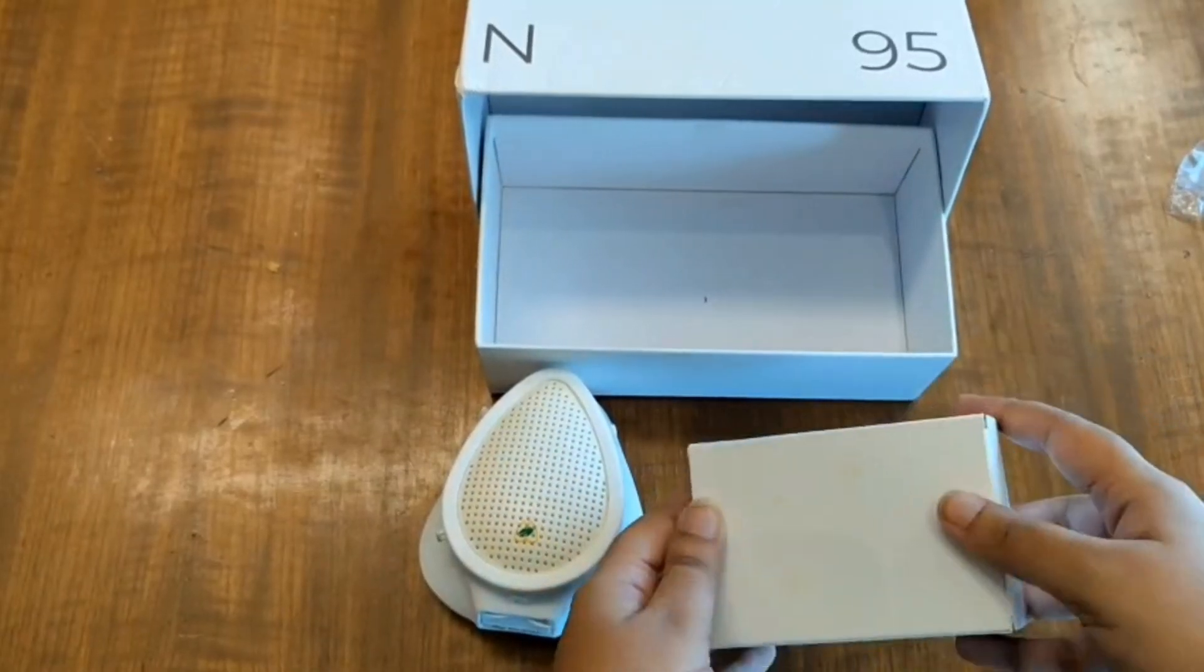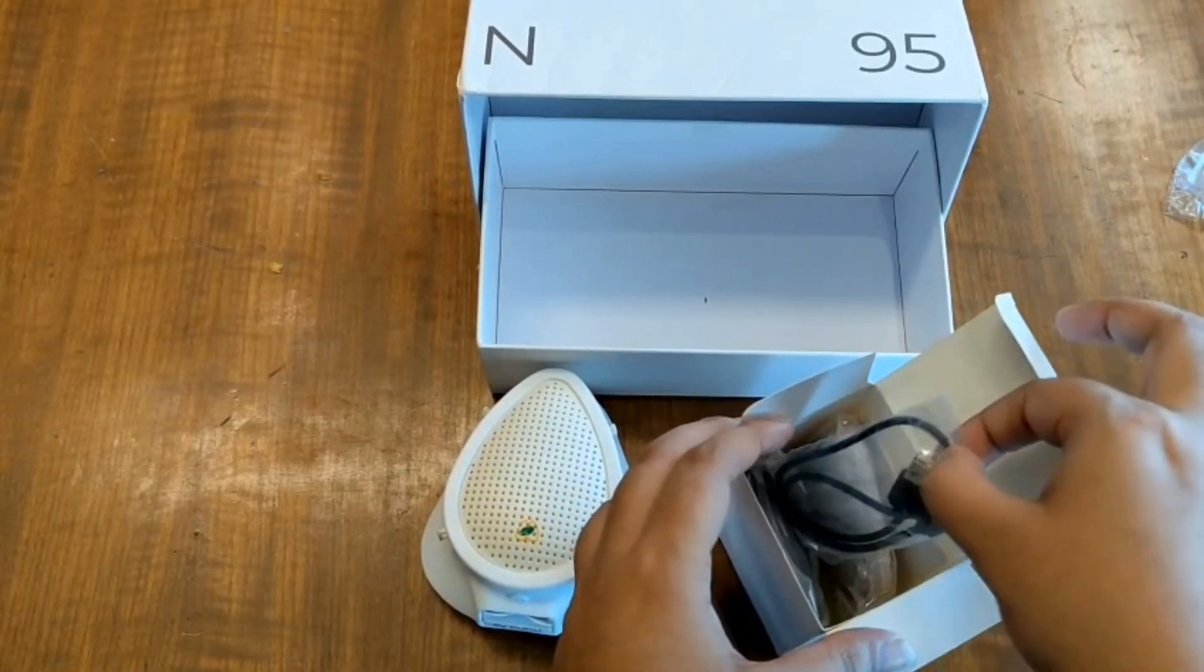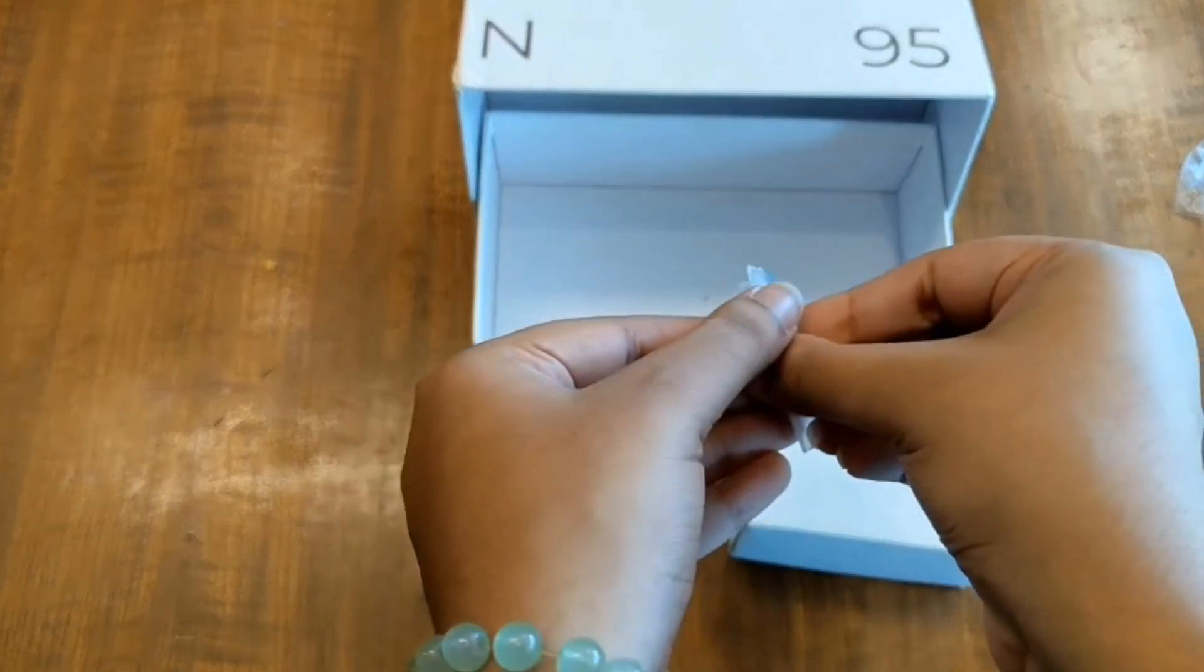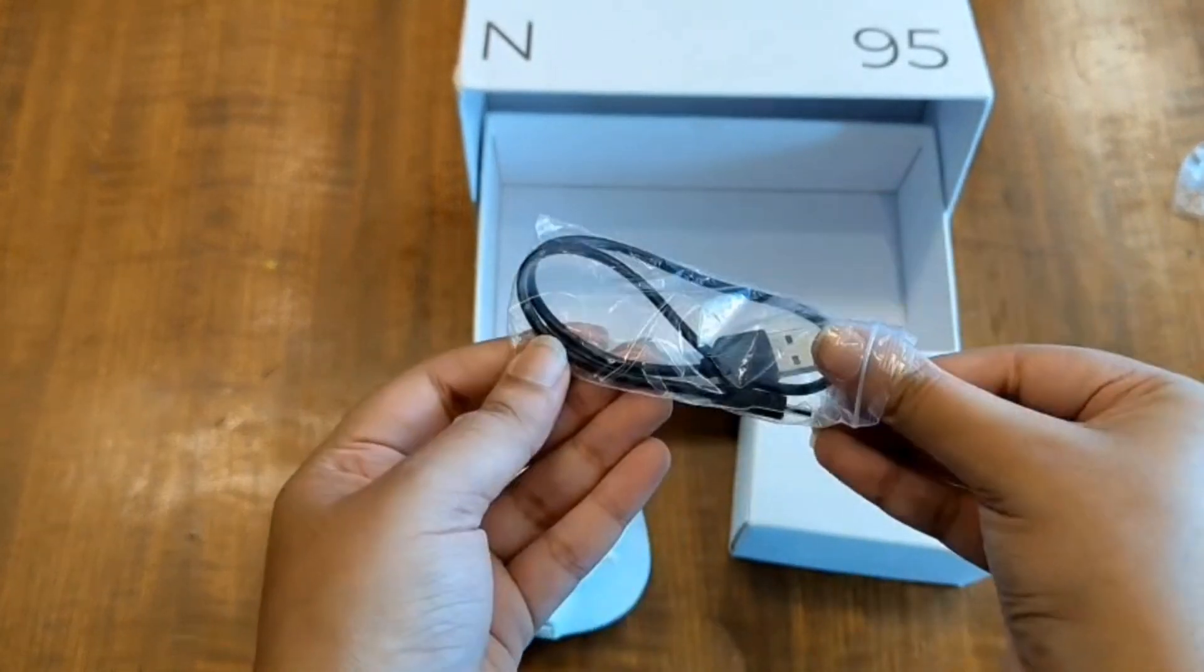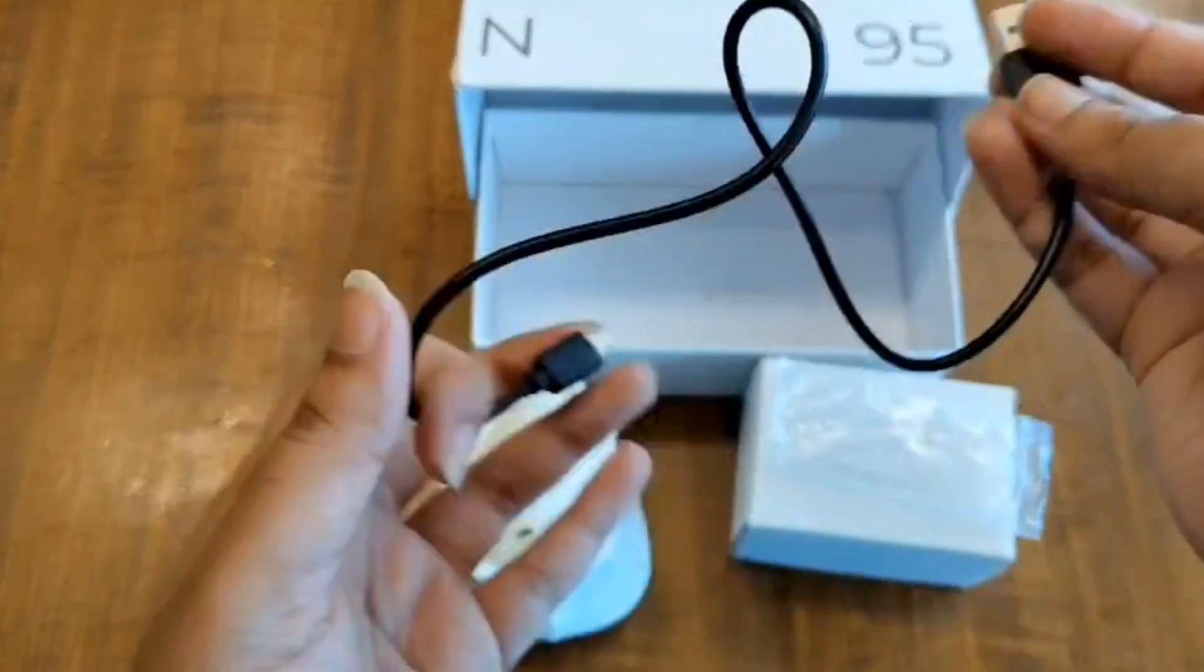Start by taking out the USB charging cable from the accessories box. Take it out from the wrapper. Straighten it gently so that it's easy to connect.